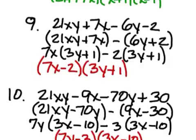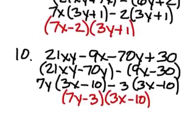For number nine it's 7X minus 2 and 3Y plus 1. And number ten is 7Y minus 3 and 3X minus 10. Any of these problems you want to go back and see the work for?